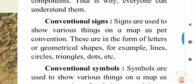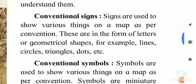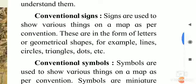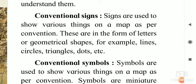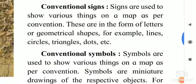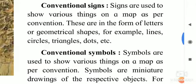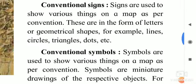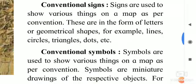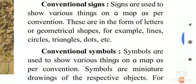Next: Conventional signs — मतलब संकेत. Signs are used to show various things on a map as per convention. These are in the form of letters or geometrical shapes, for example lines, circles, triangles, dots, etc. Map में अलग-अलग घटक दर्शाने के लिए उपयोग में लाए जाने वाले संकेत प्रायः भूमितीय आकृतियों के स्वरूप में होते हैं — जैसे रेखा, वृत्त, त्रिकोण, बिंदू.